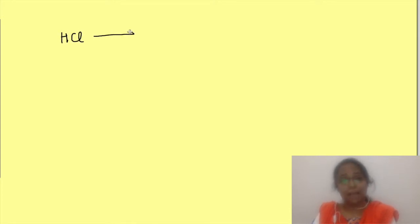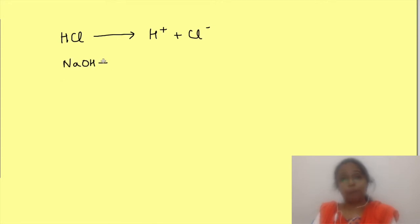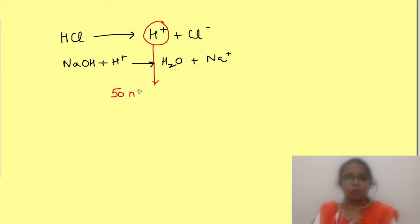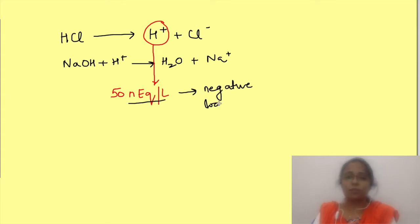Any substance which adds a hydrogen ion into a solution is known as an acid, while any substance which binds with a hydrogen ion is known as a base. The concentration of hydrogen ions in our body is very less — approximately 50 nano-equivalents per litre. Because the concentration is so less, it is expressed as the negative logarithm of the concentration of hydrogen ions. This is known as pH.